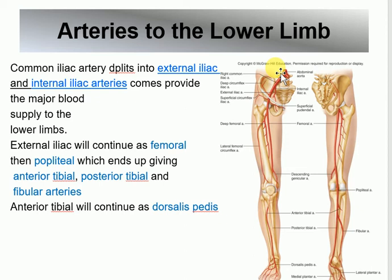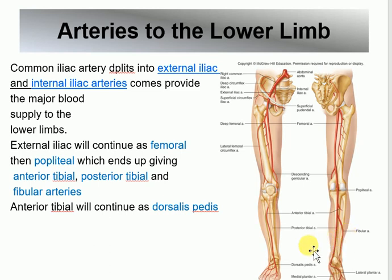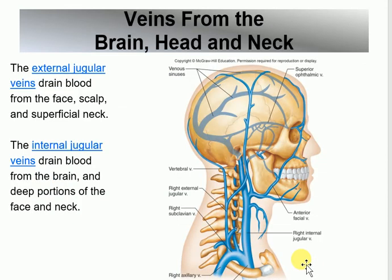To summarize the lower limb arteries: descending abdominal aorta → right and left common iliac → internal and external iliac → external becomes femoral → popliteal → anterior tibial, posterior tibial, and fibular. The posterior tibial is one of the pulse points. The anterior tibial continues and becomes the dorsalis pedis — also a pulse point.